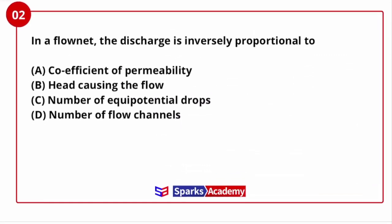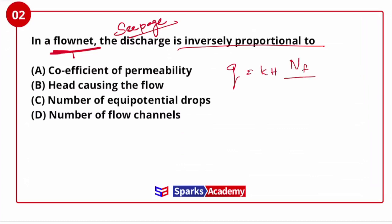Let's move to the next question. In a flow net, the seepage discharge is inversely proportional to what? Seepage discharge Q is represented as Q = KH × (NF / ND). So K represents the coefficient of permeability, and H is the head difference between upstream and downstream.